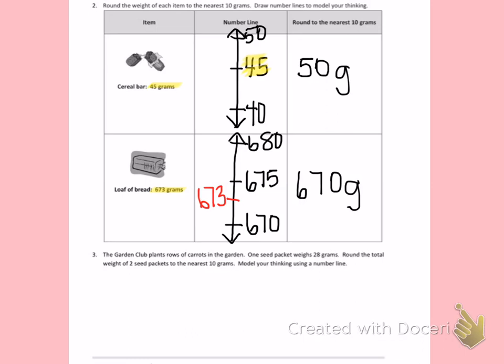Round the total weight of two seed packets to the nearest 10 grams. Model your thinking using a number line. So I have one packet of seeds that weighs 28 grams. I need to find out the weight of two seed packets. The first seed packet is 28 grams, the second seed packet is 28 grams. I want to find out their weight. To find the weight of those two packets I am going to add. 8 plus 8 is 16. I'm going to regroup the one underneath. 2 plus 2 is 4 plus one more is 5.